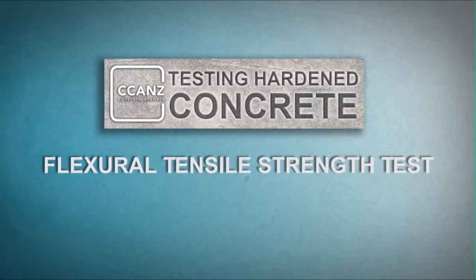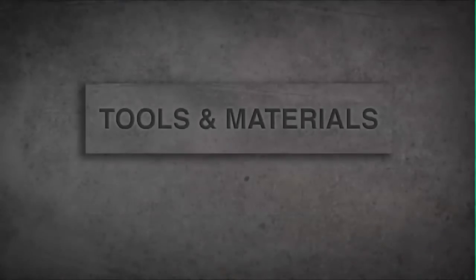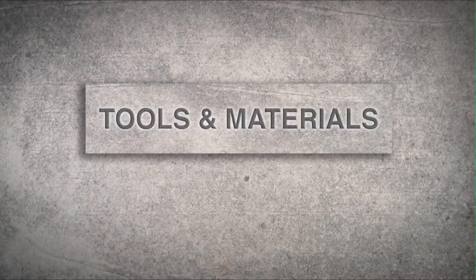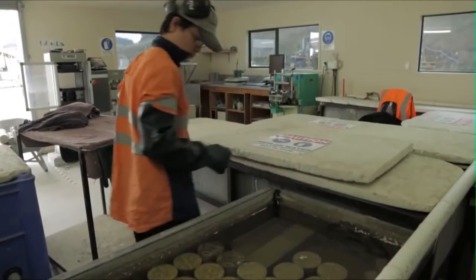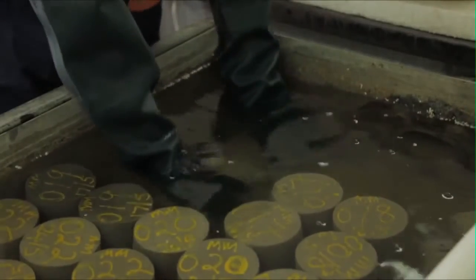You should note that the standard specifies in detail in section 5 how the specimens are molded and cured for subsequent testing. To conduct the test, in addition to the test machine itself, you'll need a ruler and a marker. You'll also need to record the results in your company's quality control system.